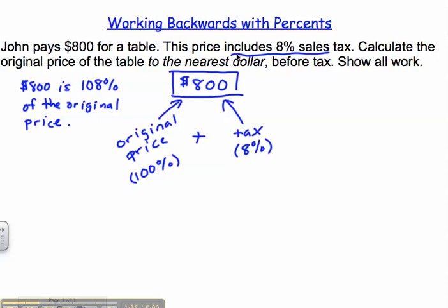So if I use a proportion to solve this, my price that I've paid is 800, and what I'm solving for is what the original was. My percent is 108, and I'm always comparing that to 100. When I cross-multiply, I get 108x equals 80,000.